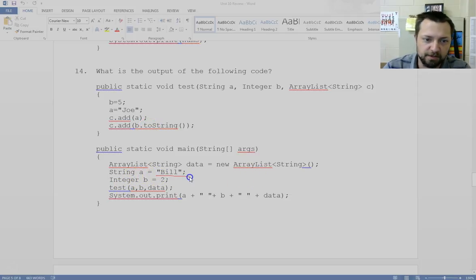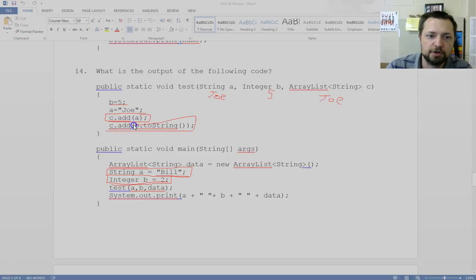Here we have a string, it's bill. We have an integer, 2. And we have data, which is an ArrayList. We send all those things to the method. But remember, when you send strings and wrappers, they are immutable. They, even though they are sent by reference, they behave like they're by value. So there is a local copy B. That local B changes to a 5. There is a local A. It changes to Joe. We add Joe to our list. Then we add the text version of 5 to the list. When we get back to main, A is unchanged because it's behaving like it's by value. So we get bill. B is still a 2. But our list is bracket Joe, comma, 5.